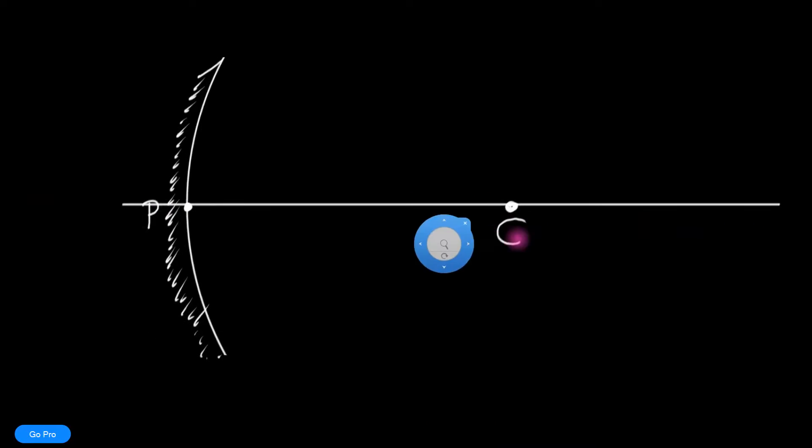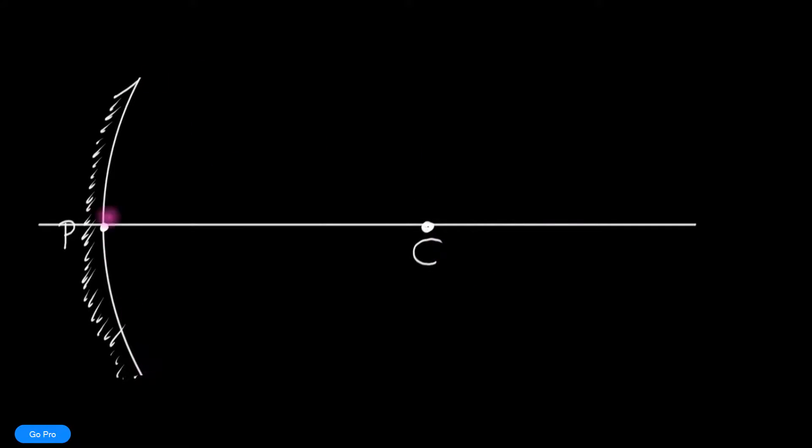You know why I love spherical surfaces? It's very easy to draw normals. Usually if you want to draw a normal to a curve, say at this point, it would be a pain in the neck because you'd first have to draw a tangent and then draw a perpendicular to that tangent. But when it comes to spheres, we don't have to do that.